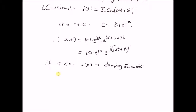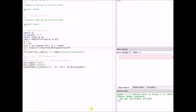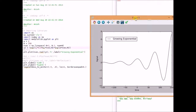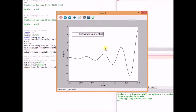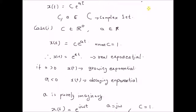The second possibility is when r is greater than 0. Then x(t) is basically a growing sinusoid. In this case the value of r is a positive number, so the amplitude of the signal basically grows very quickly. However, it is still a sinusoid.